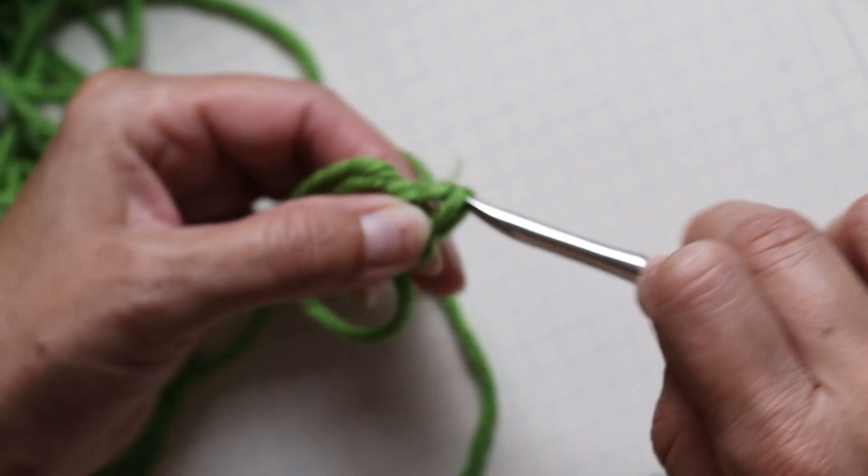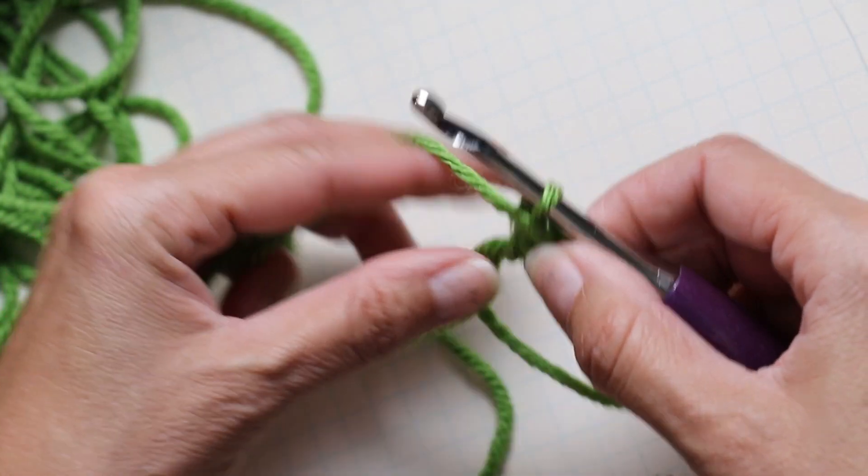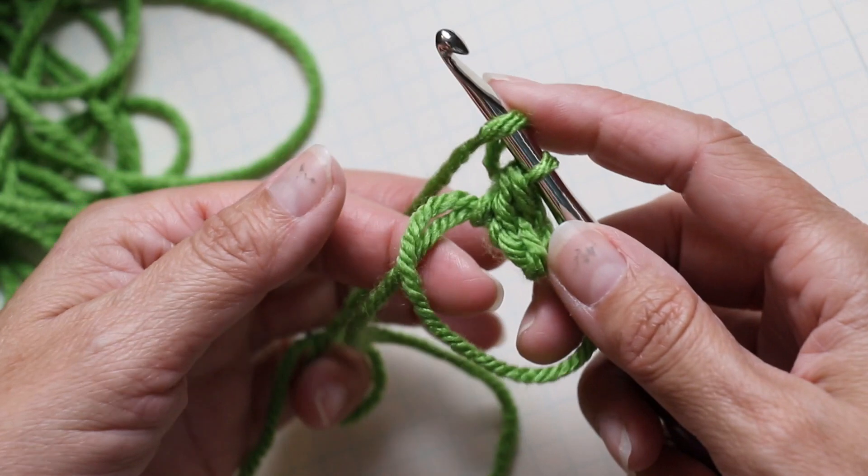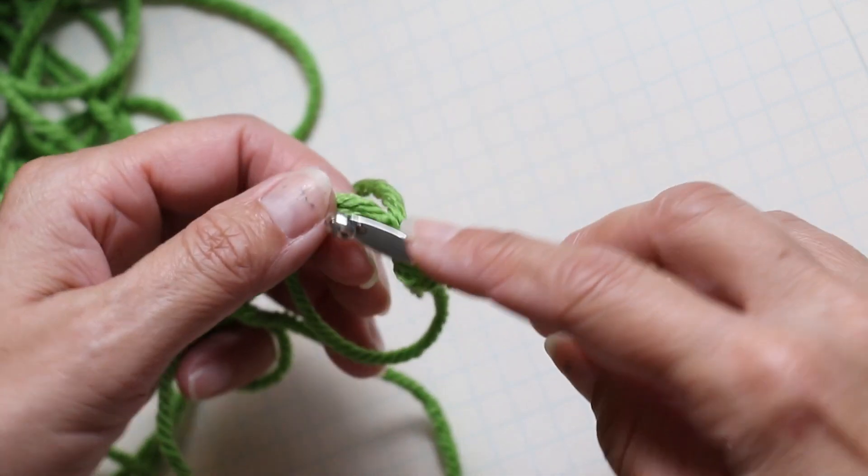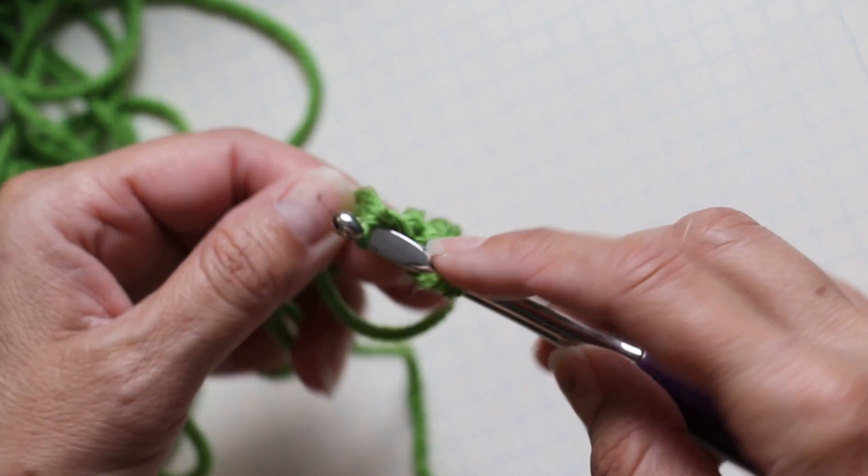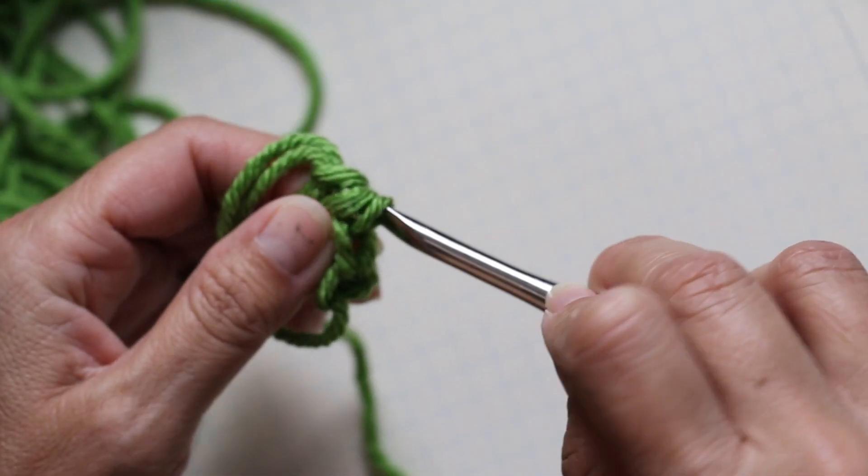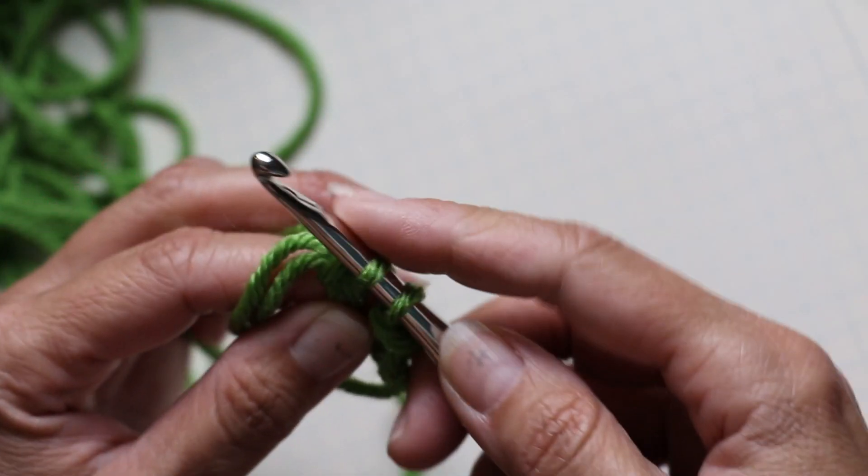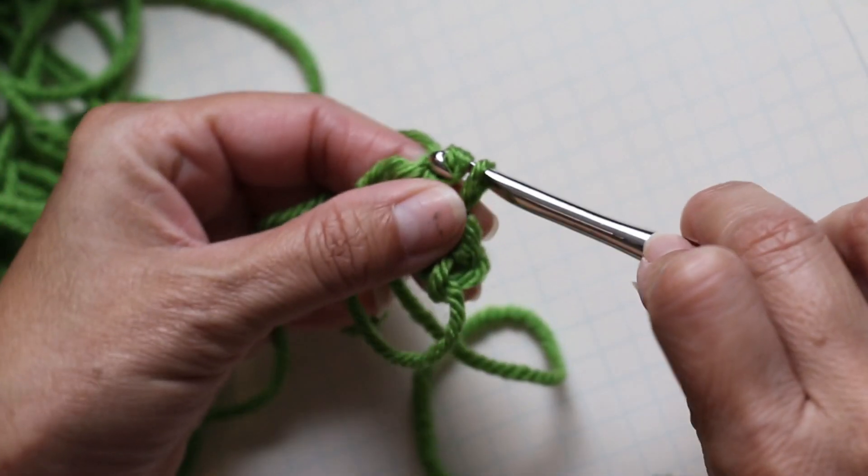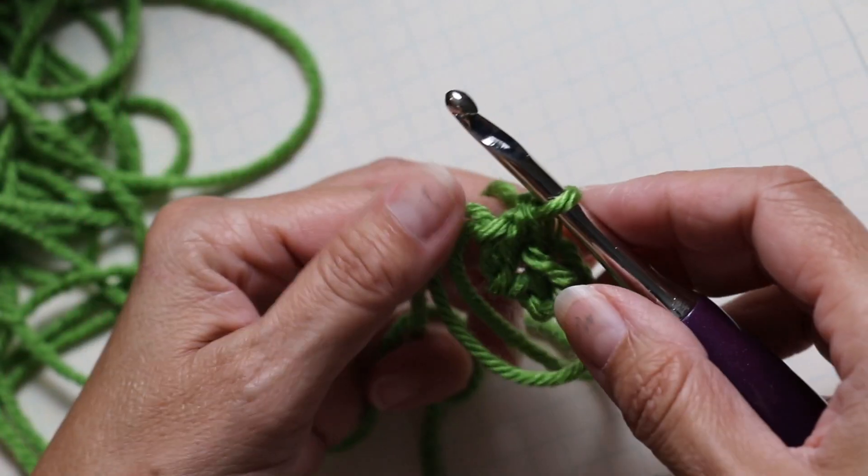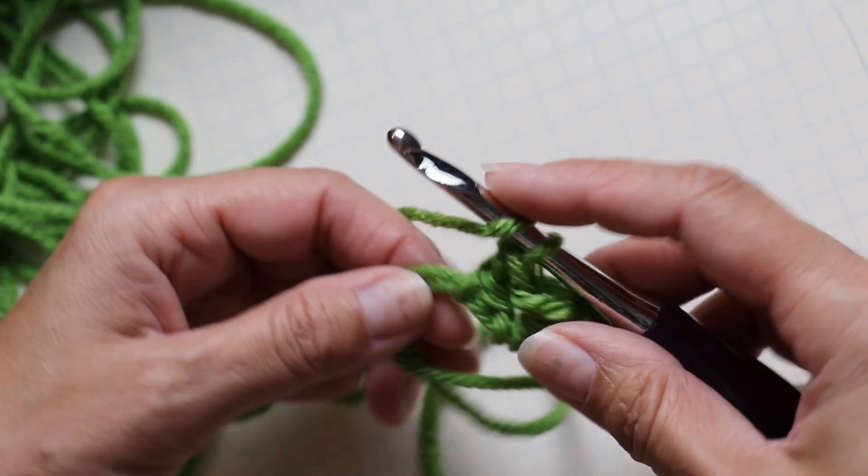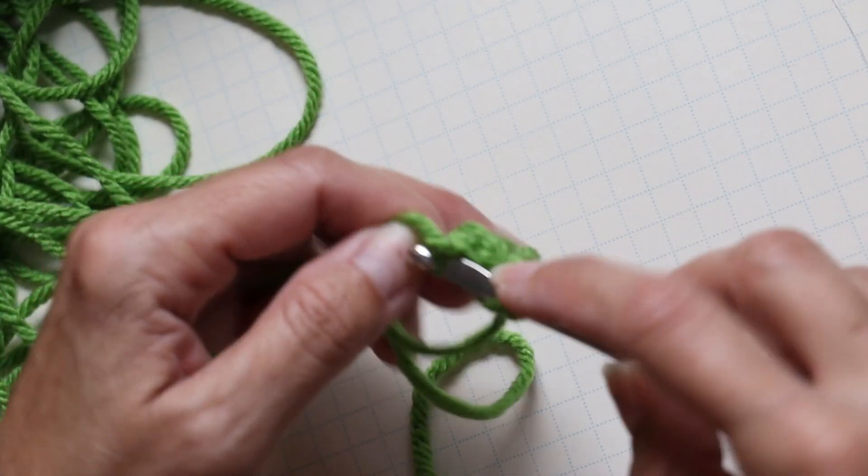I'm just going to yarn over keeping these two together, go through the circle, pull your yarn to make your stitch, whatever stitch it is that they tell you to do. Again, make your stitch holding those two together.